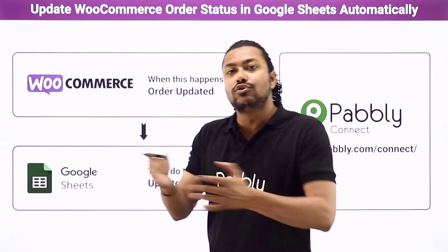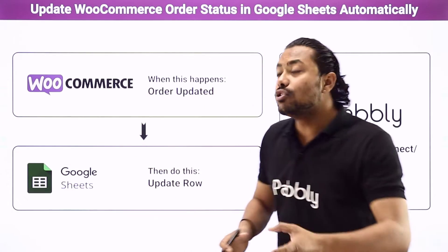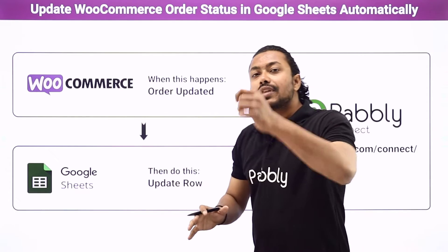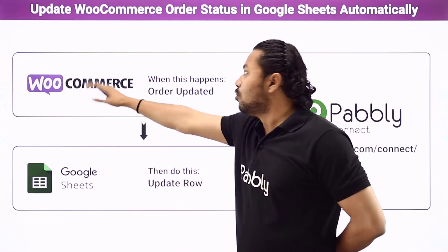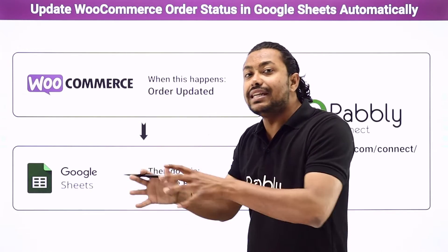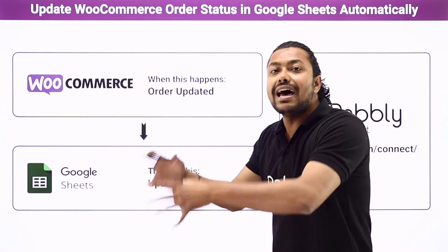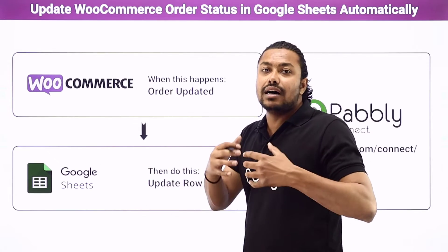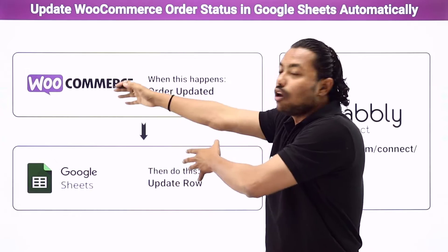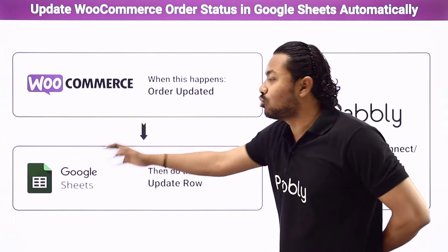Why would you need this automation? Suppose you have two wings — accounts and inventory. You do not want inventory people to access your WooCommerce account. Any person from accounts will update WooCommerce, and anyone from the inventory section who wants to view the order update can view it in Google Sheets, because they have access to Google Sheets. You do not have to share your WooCommerce password with your inventory section.